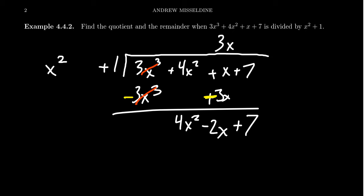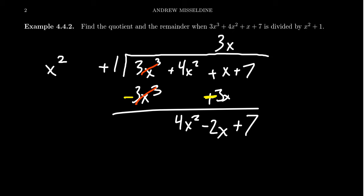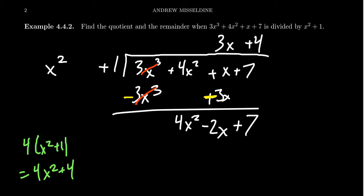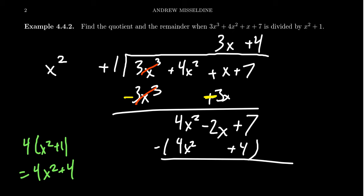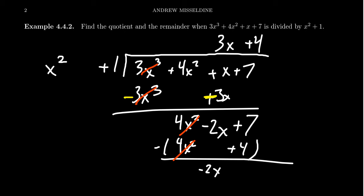Polynomial division is like shampooing your hair — you have to rinse and repeat. Once the first step is done, we consider the new leading term 4x squared divided by x squared, the leading term of the divisor. This gives us 4. We record that 4 on top, then take 4 times x squared plus 1, which gives us 4x squared plus 4. We record that below and subtract from above. The 4x squareds cancel out, we get negative 2x, and then 7 minus 4 gives us plus 3. This is our remainder — a linear polynomial is too small to be divided by a quadratic, so negative 2x plus 3 is the remainder.